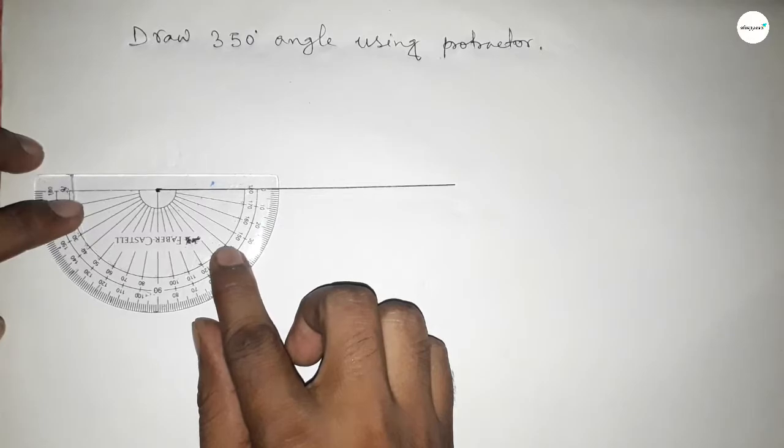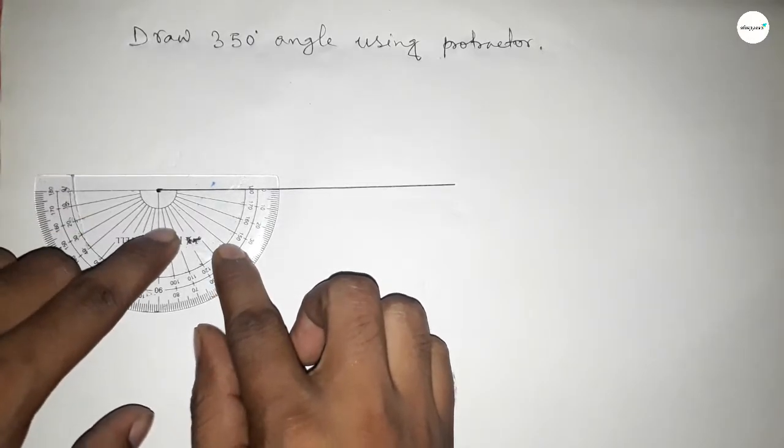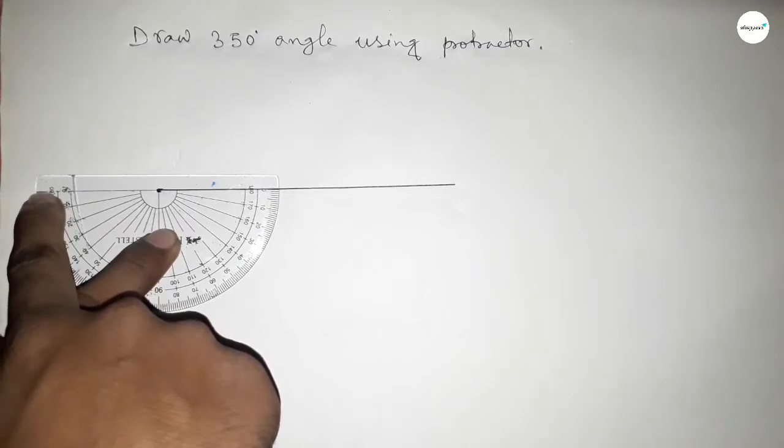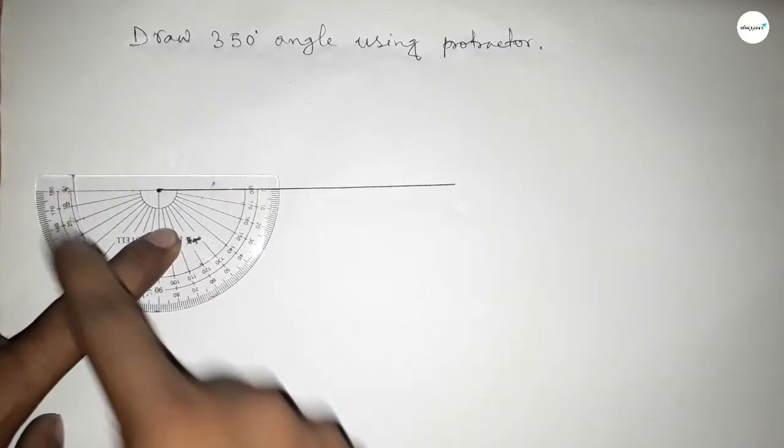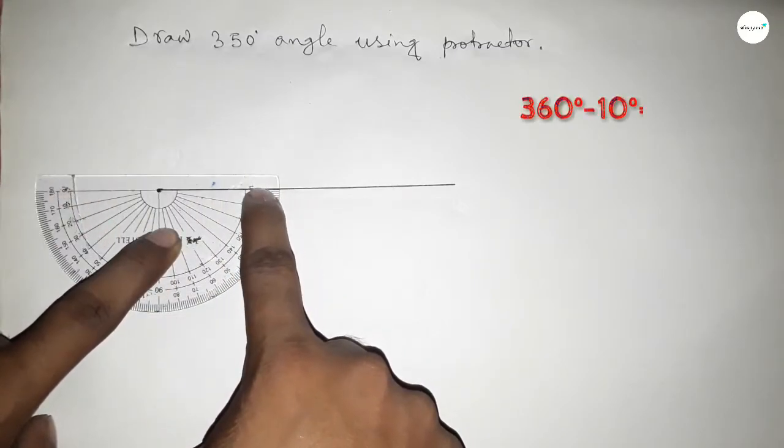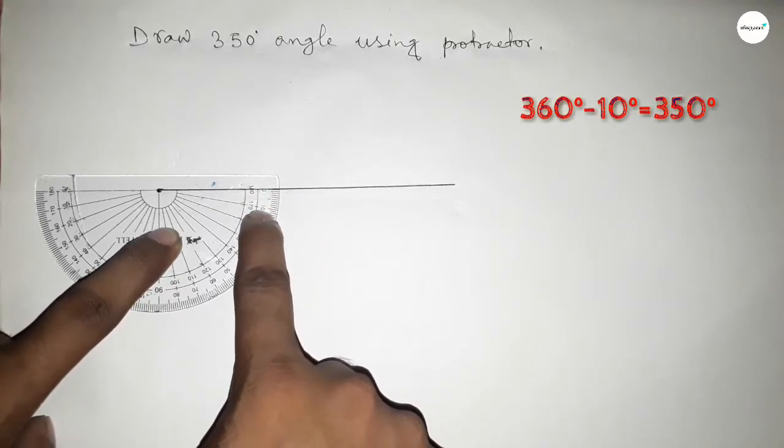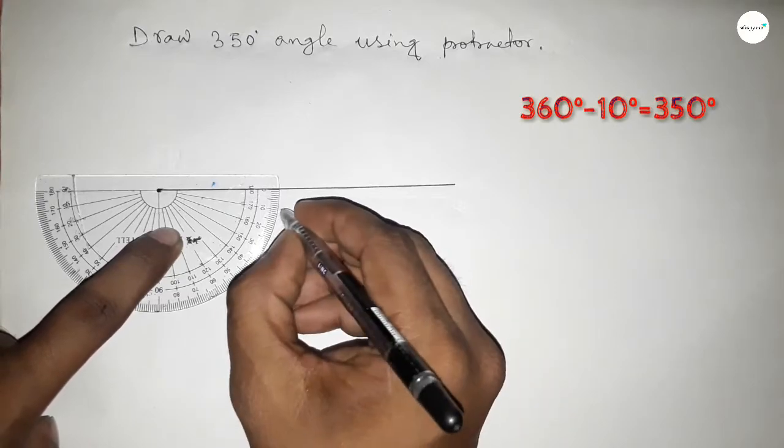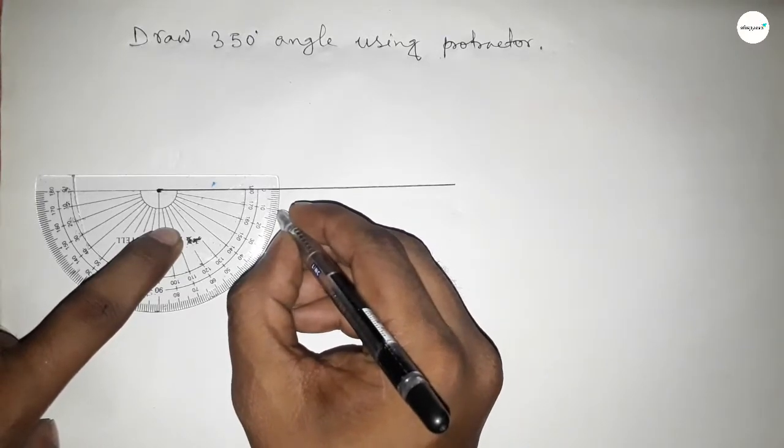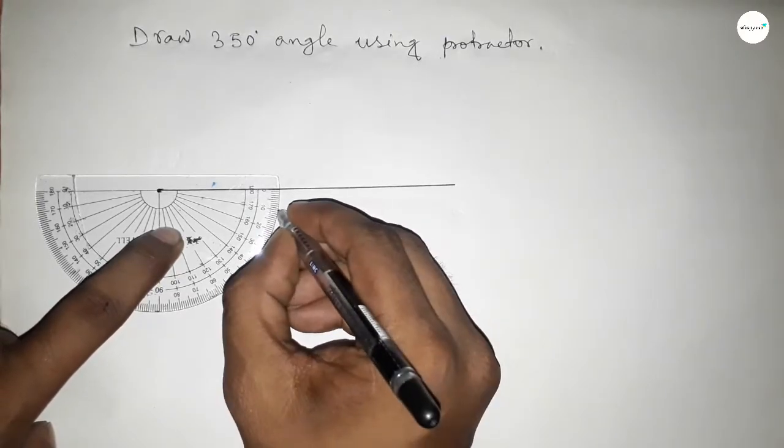Next, if you subtract 10 degree angle, this is 180 and this is 180, and this is 360. If you subtract 10 degree angle from 360 degree, then we can get 350 degree angle. So this is 350 degree angle by subtracting 10 degree angle from 360 degree angle.